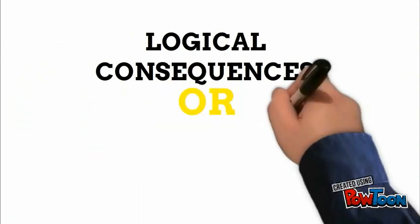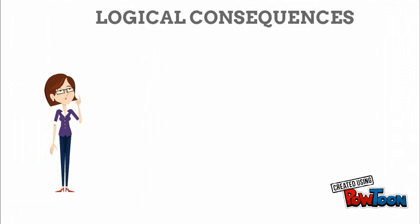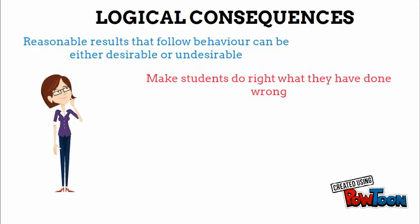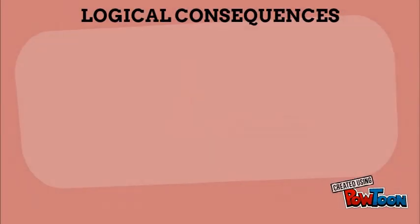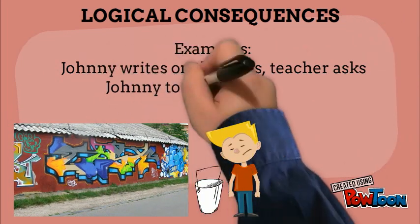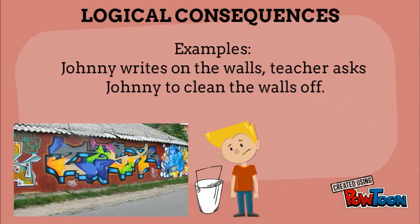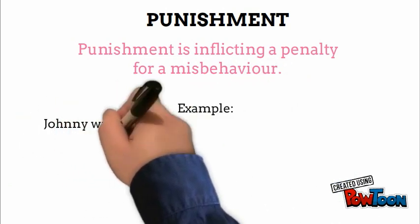Logical Consequences versus Punishment. A logical consequence is a reasonable result that follows a behavior, which can be desirable or undesirable, and it encourages students to correct what they have done wrong. Dreikers recommends having a democratic classroom so students know the consequences ahead of time. For example, Johnny writes on the walls, so the teacher asks Johnny to clean off the walls. For punishment, this is inflicting a penalty for misbehavior — for example, Johnny writes on the walls, so you keep him in for recess.